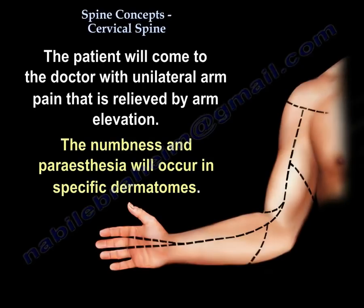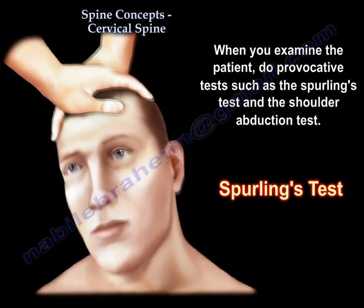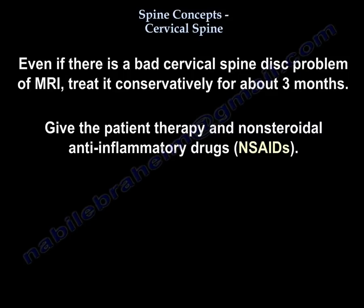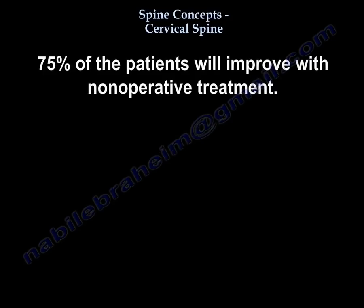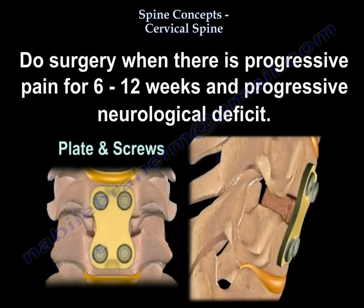The patient will come with unilateral arm pain relieved by arm elevation, with numbness and paresthesia in a specific dermatome. When you examine the patient, perform provocative tests such as Spurling's and the shoulder abduction test. Even if the MRI shows a bad cervical disc, treat conservatively for about three months with therapy and NSAIDs — 75% of patients improve with non-operative treatment. Do surgery when there is persistent pain for 6 to 12 weeks or progressive neurological deficit.